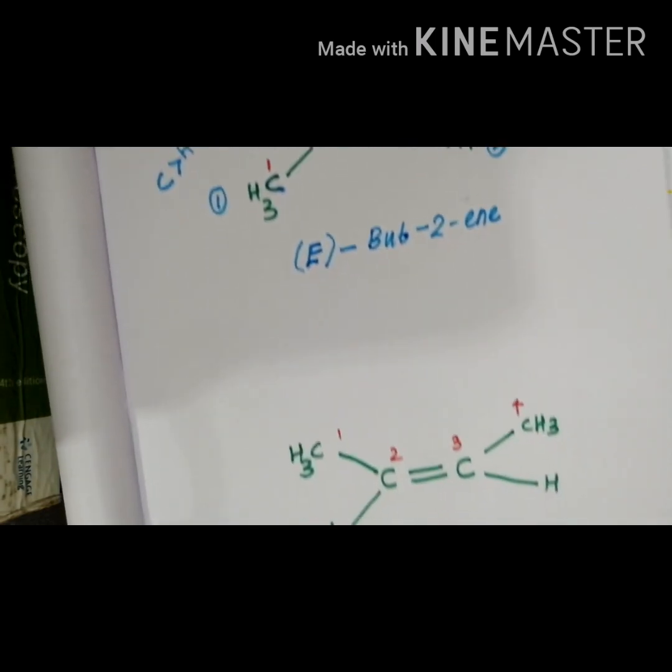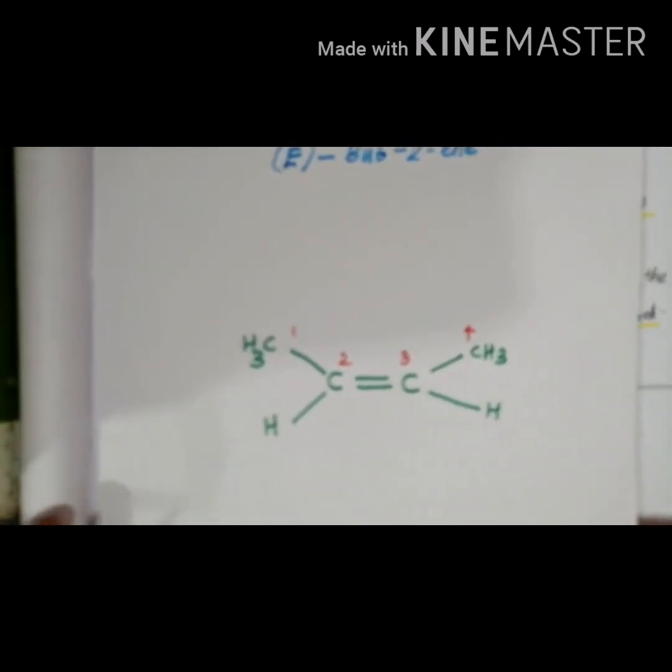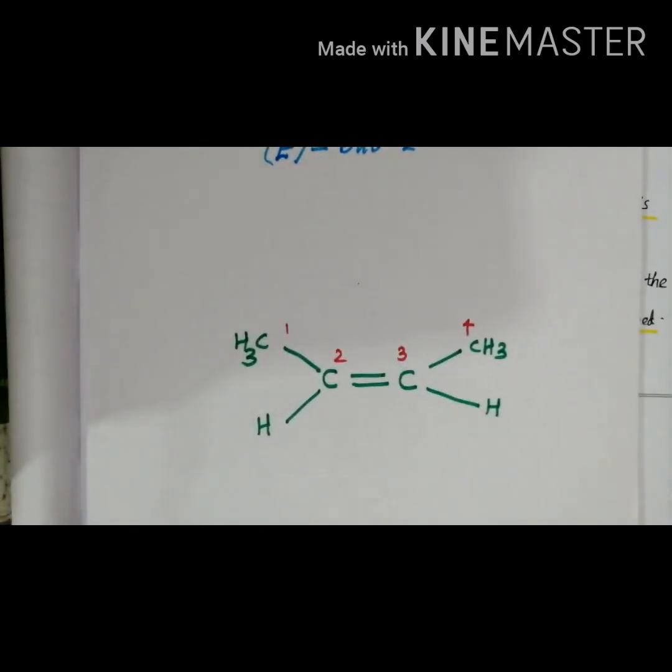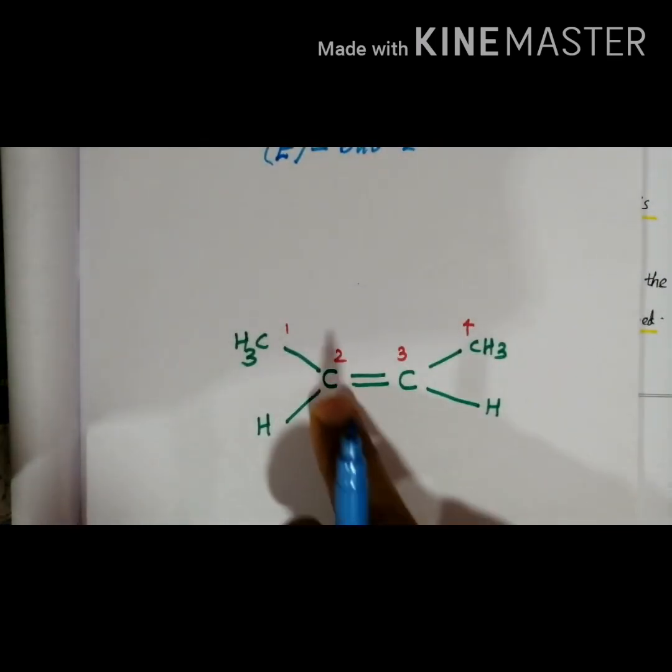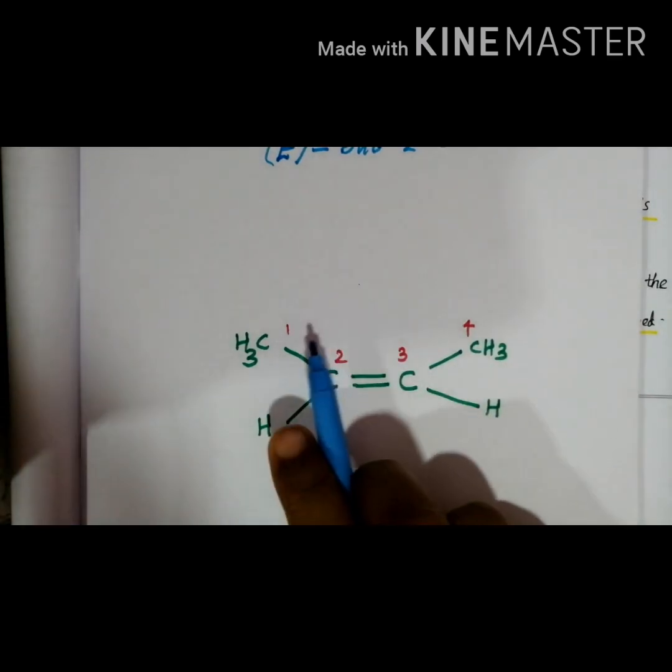Then the second example is just similar. I am just replacing the group. Then I am giving IUPAC number, position number 1, 2, 3, 4.